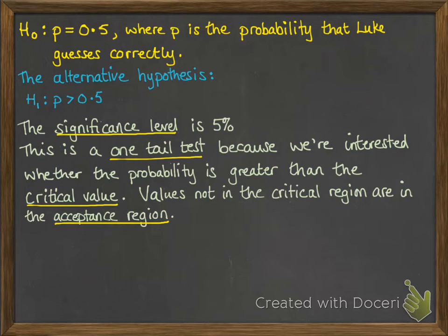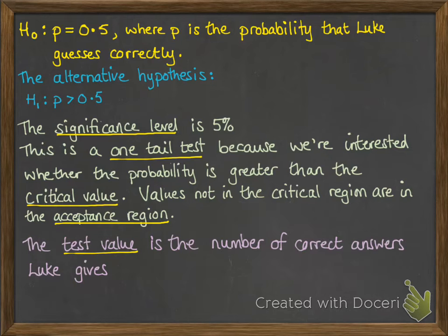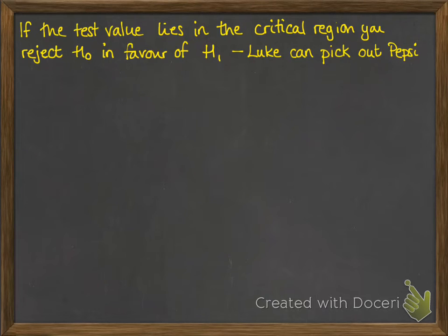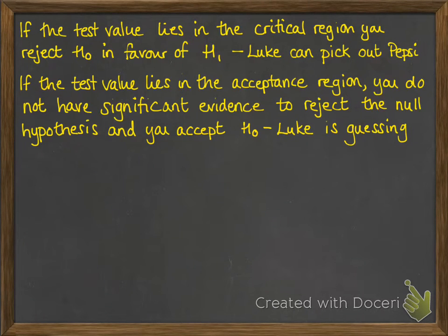Values that aren't in the critical region are in what we call the acceptance region — meaning we would accept that it's consistent with random events. The test value is the number of correct answers that Luke gives. If the test value lies in the critical region, you reject the null hypothesis in favour of the alternative hypothesis, meaning Luke can pick out the Pepsi. If the test value lies in the acceptance region, you don't have significant evidence to reject the null hypothesis — you accept that it's all just random and that Luke would just be guessing. He can't make that claim at the 5% significance level.